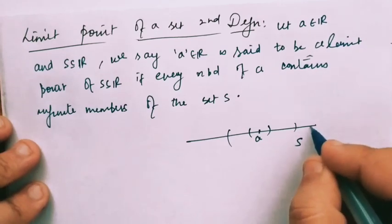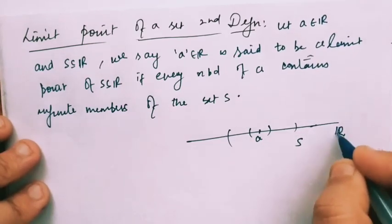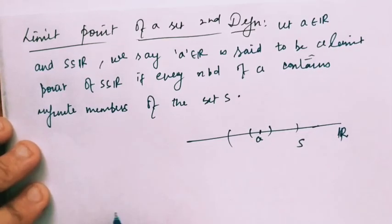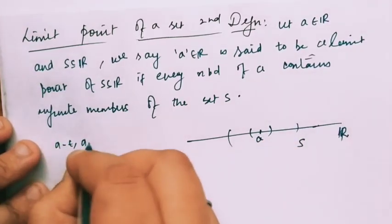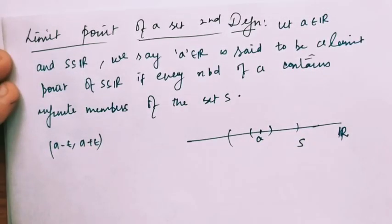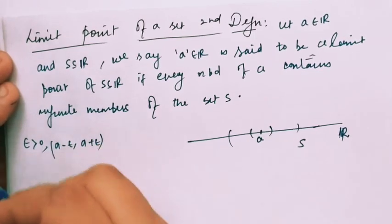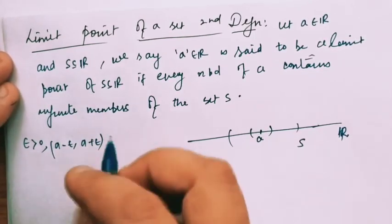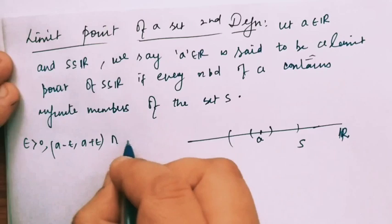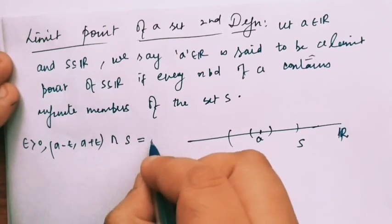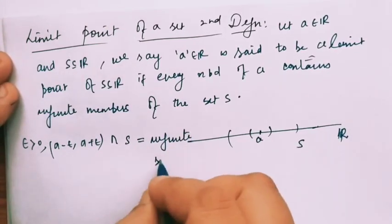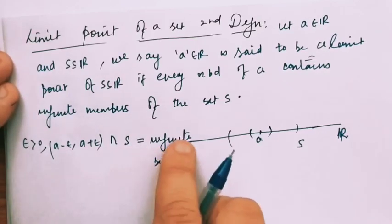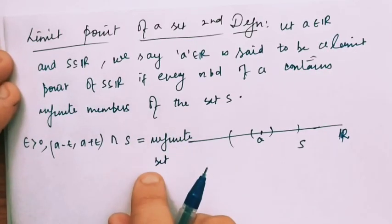For example, if we assume S and our set of real numbers, and we construct a neighborhood — that is, the interval from a minus epsilon to a plus epsilon — then the intersection of (a minus epsilon, a plus epsilon) with S must be an infinite set. It is not sufficient to be just non-empty; it must be an infinite set.